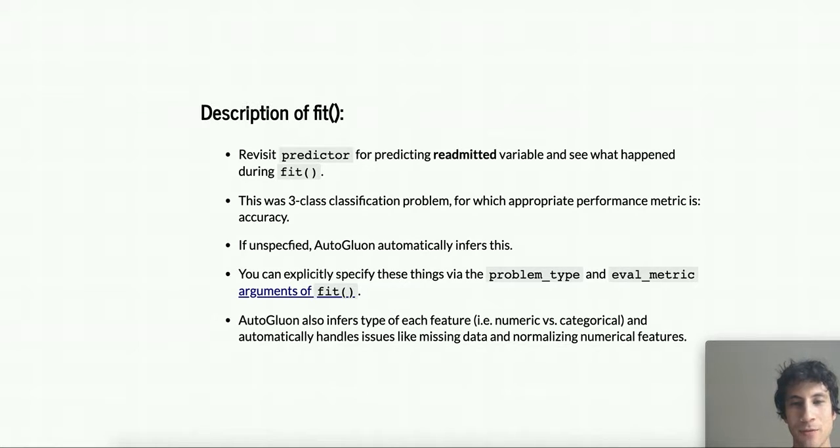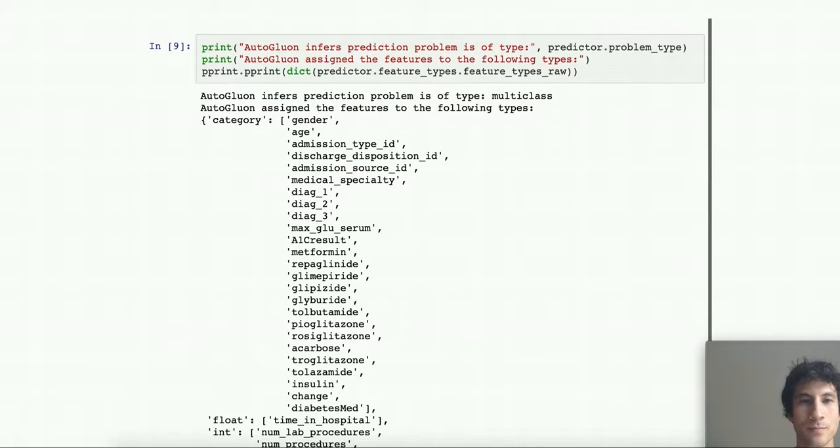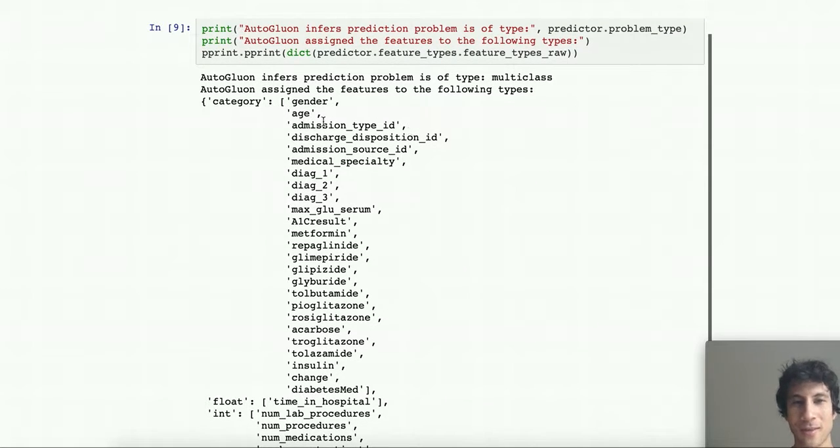AutoGluon also infers the type of each feature in addition to the type of prediction problem, basically whether it's a numeric column, is it a categorical column of discrete values, and it'll also automatically handle things like data processing, dealing with missing values, and normalization of numerical values if needed. So here we can look at our trained predictor and sort of see a summary of what it inferred. So here we guessed the problem type was multi-class once again, and then it guessed the following feature types for each column in the dataframe. So categorical features are those that are discrete, like gender and age - recall age here is actually string intervals of lower bound to upper bound of the patient's age for privacy reasons. Things like the diagnosis, the primary diagnosis, secondary diagnosis, whether or not they're given particular medications, etc. And these are all discrete features.